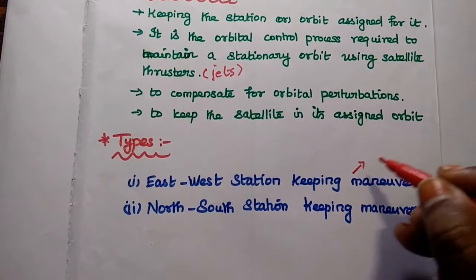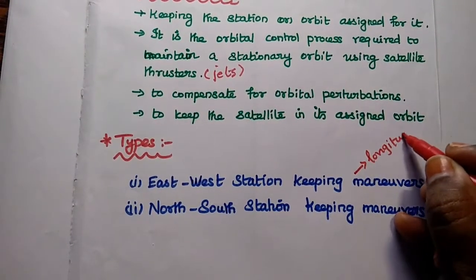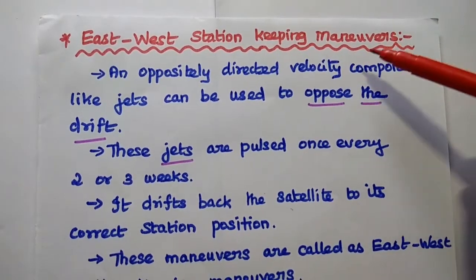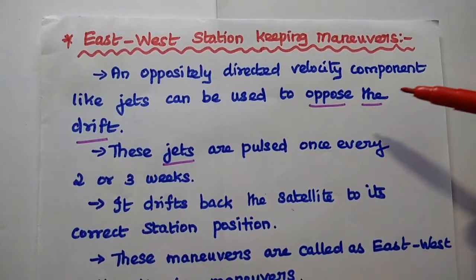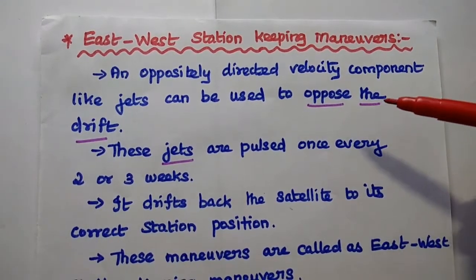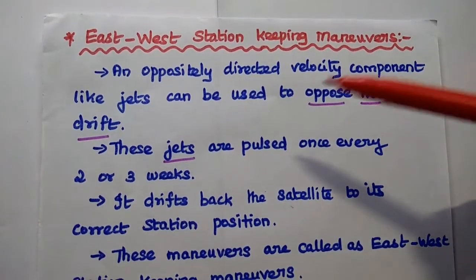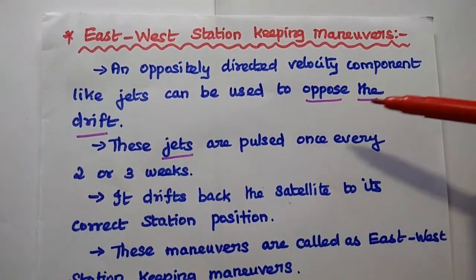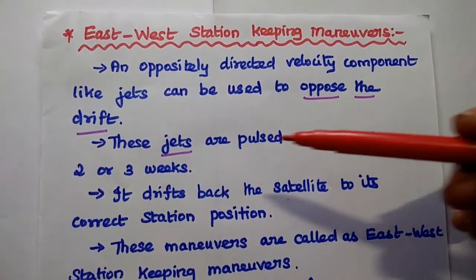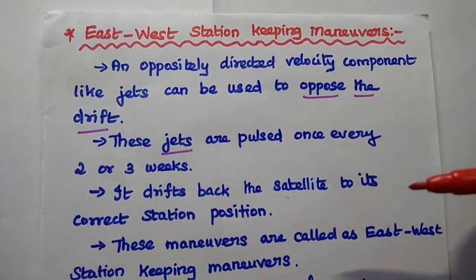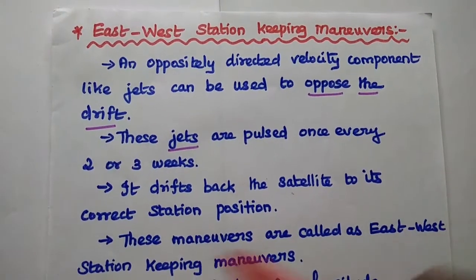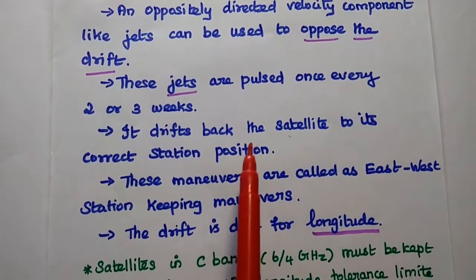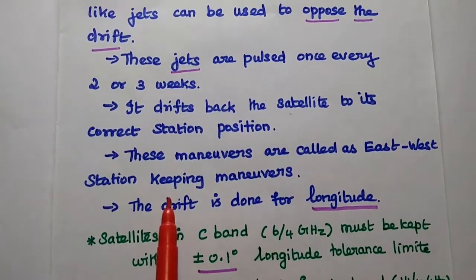East-west station keeping deals with longitude, while north-south deals with latitude. Due to the equatorial ellipticity of the Earth, the satellite drifts slowly along the orbit in the east or west direction. An oppositely directed velocity component — using propulsion, thrusters, or jets — can be used to oppose the drift. These jets are pulsed once every two or three weeks to drift the satellite back to its original position, where it remains until the jets are pulsed again.